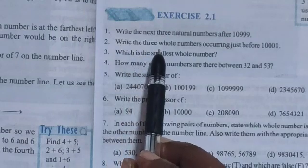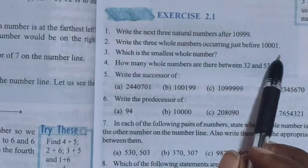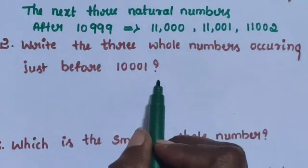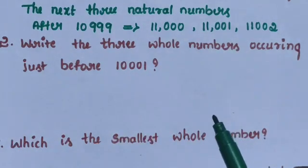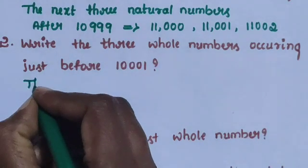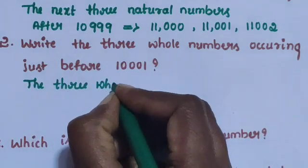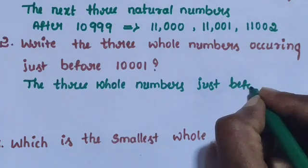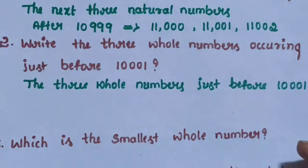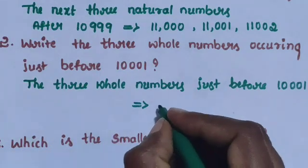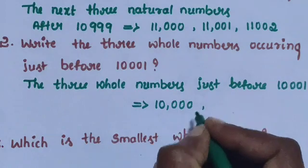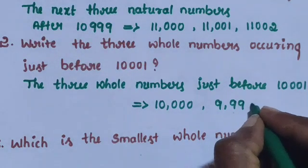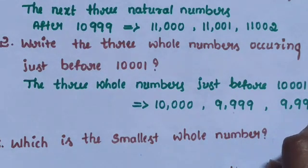Question number 2: Write the 3 whole numbers occurring just before 100001. The 3 whole numbers just before 100001 are 99998, 99999, and 100000.